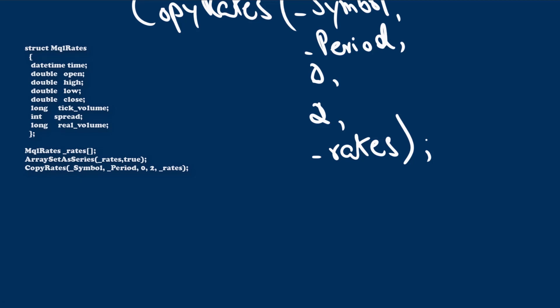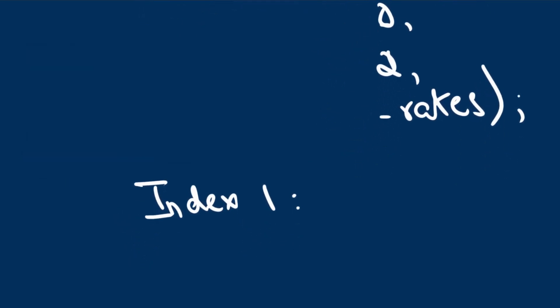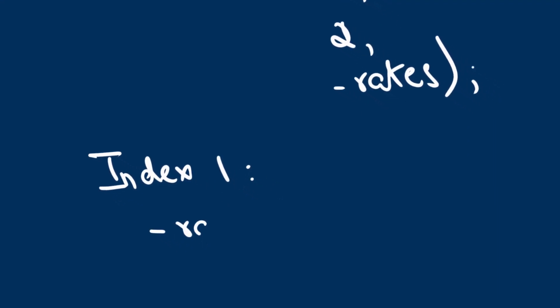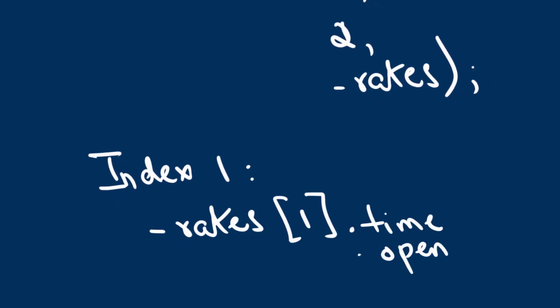Accessing the data is then a simple case of indexing into the array — for instance, index one represents the last completed bar. You access open, high, low, close, tick volume, time, and so on through the struct fields at that index.